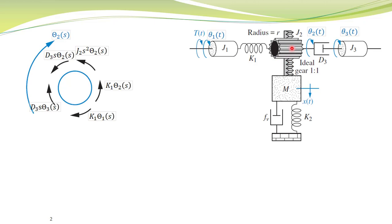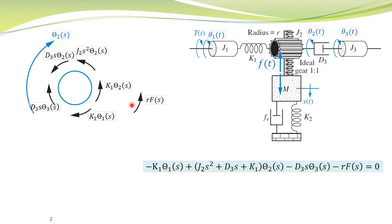When this pulley rotates, it exerts a force on this rack in the downward direction. As a reaction, this rack and the whole arrangement exerts a force equal in magnitude but opposite in direction, shown in this diagram. Let's call this force F(t). The torque due to this force is F(t) multiplied by the radius of the pulley, as shown. Now we have the free body diagram, and writing the torque balance equation gives this relation.